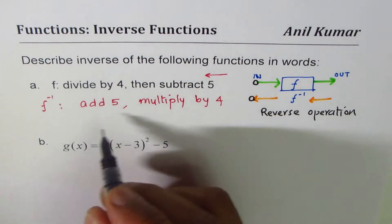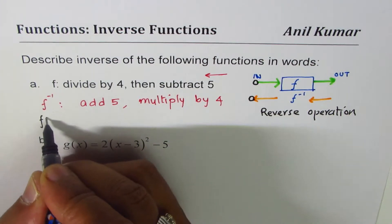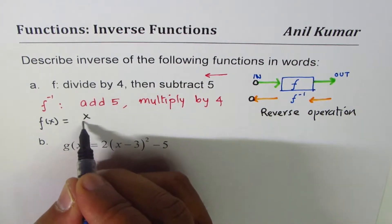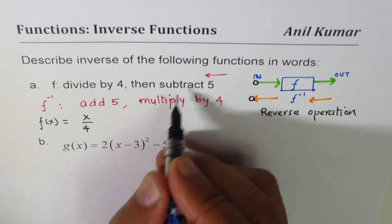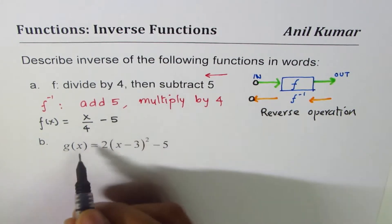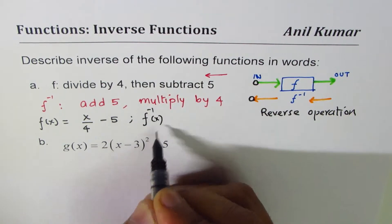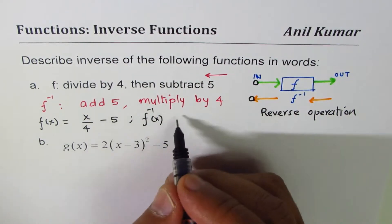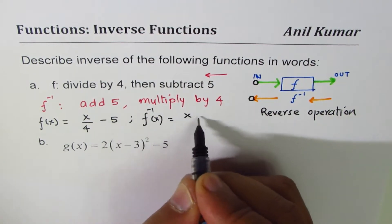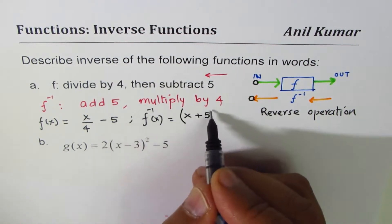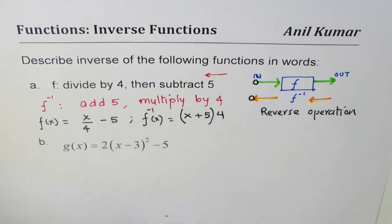To give you a concrete equation, it could be f(x) equals to divide by 4, that means x divided by 4, then subtract 5. Now what I am saying is, f inverse of x is, add 5, that means x plus 5, and then multiply by 4. Perfect. That is my inverse.